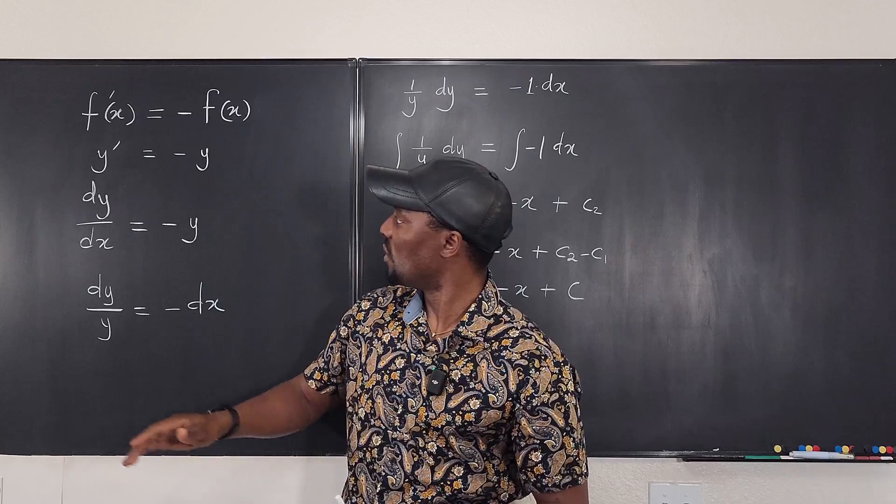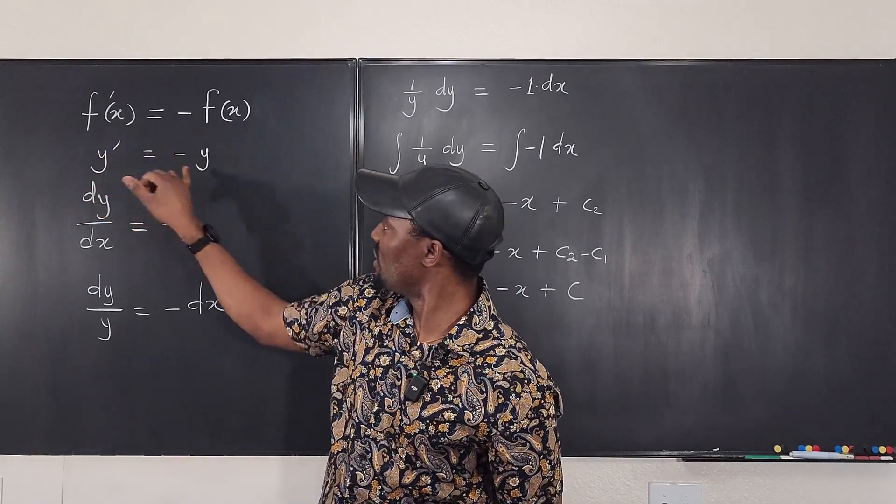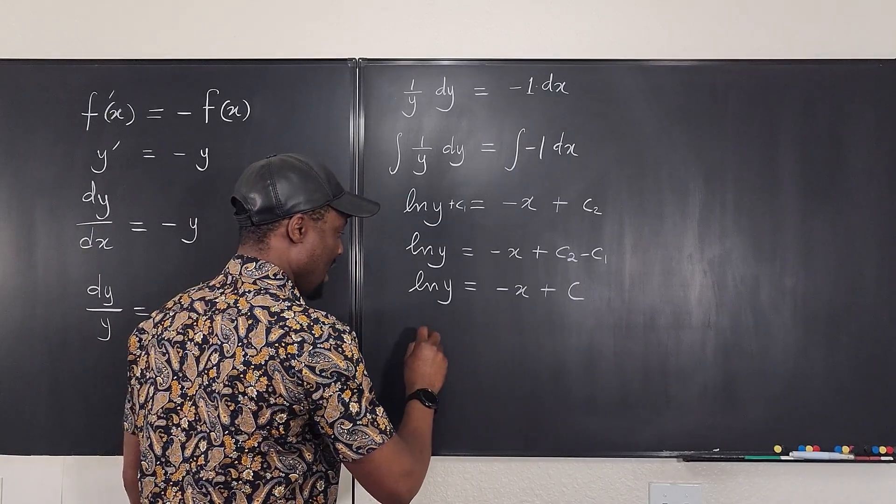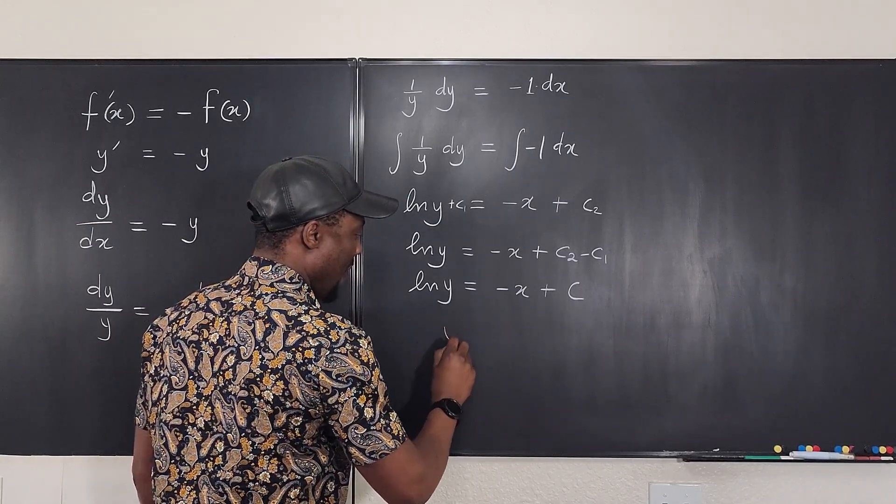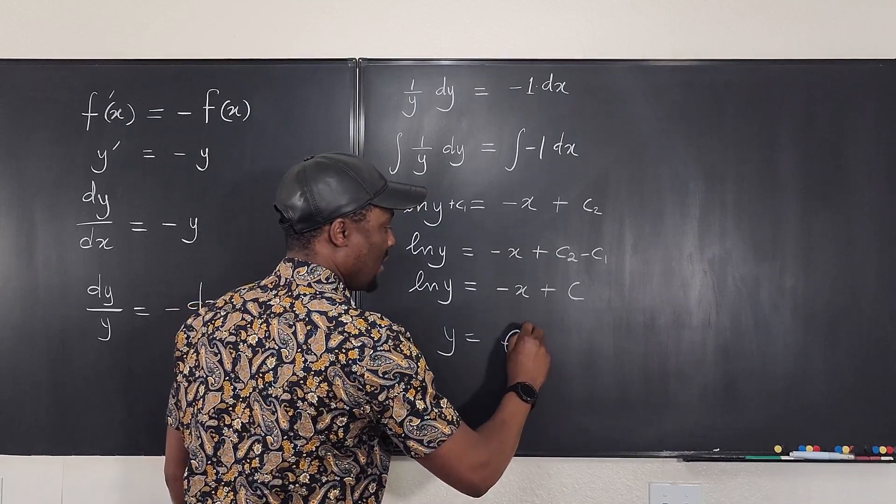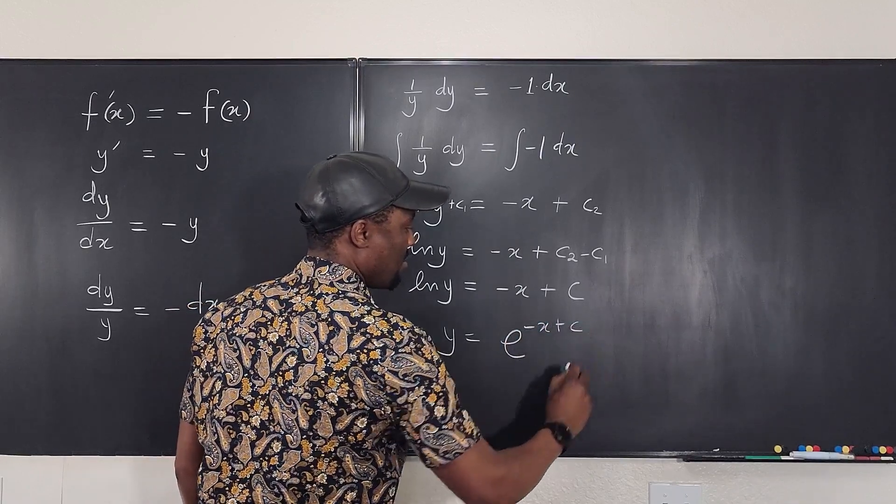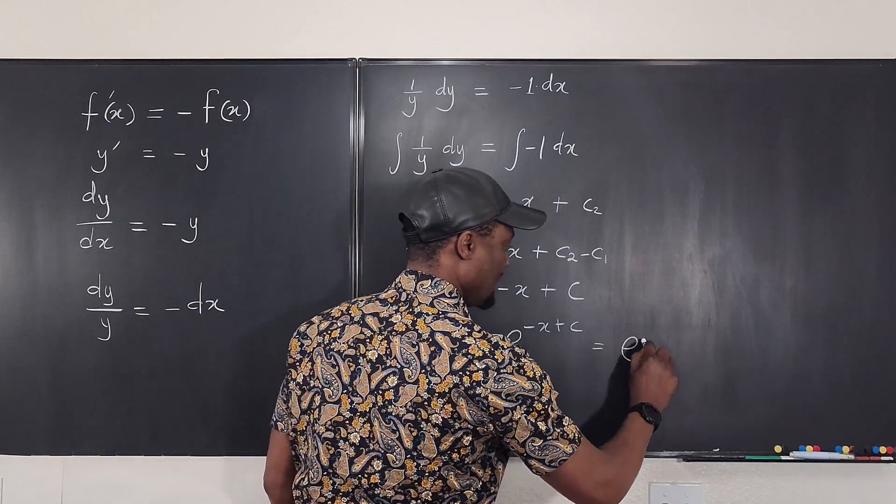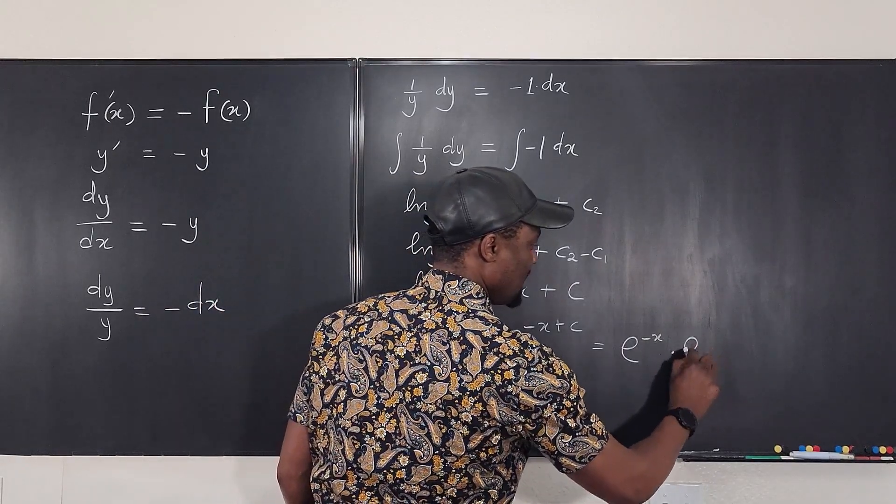Remember what we're looking for. We're looking for f of x, which is y. Okay, so what we have is natural log of y. So, we take the e of both sides. That means that y will be e of negative x plus c, which is the same thing. Look, this same thing as e to the negative x times e to the c.